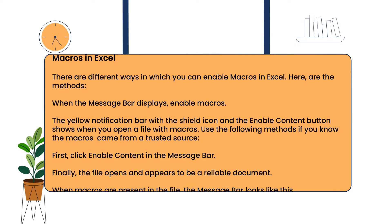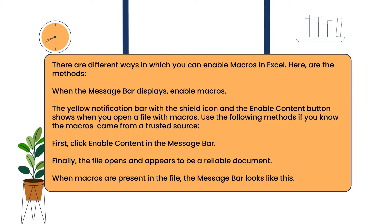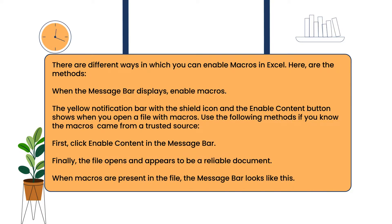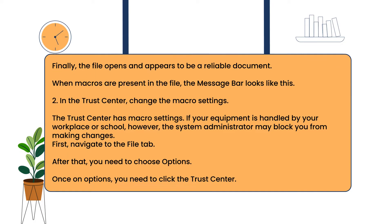Method one: when the message bar displays, enable macros. The yellow notification bar with the shield icon and the Enable Content button shows when you open a file with macros. Use the following method if you know the macros come from a trusted source. Click 'Enable Content' in the message bar. The file then opens and appears to be a reliable document. When macros are present in the file, the message bar looks like this.